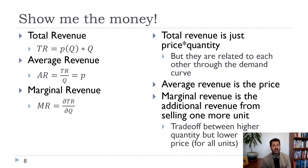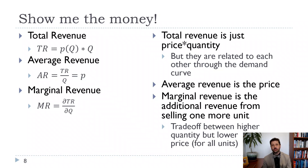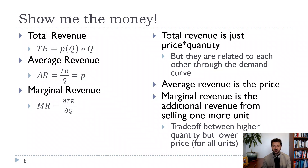We want to think about average revenue — that's total revenue divided by quantity, which is just price. We also want to think about marginal revenue. Whenever we say marginal in economics, we're thinking about one more — so what is the change in revenue due to selling one more unit? We can think of this as the derivative of total revenue with respect to quantity. In the real world, we'd think of it as the change in revenue from selling one more unit, since you can't sell an infinitesimal piece of something.